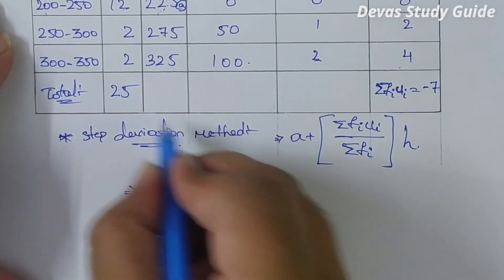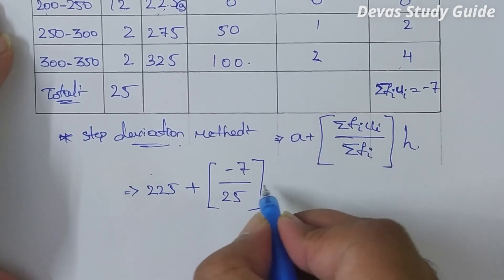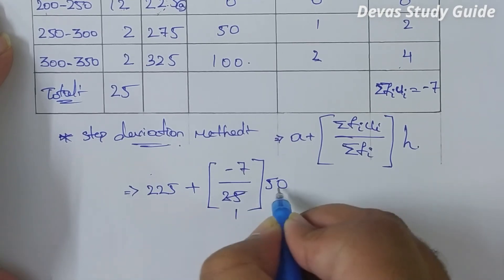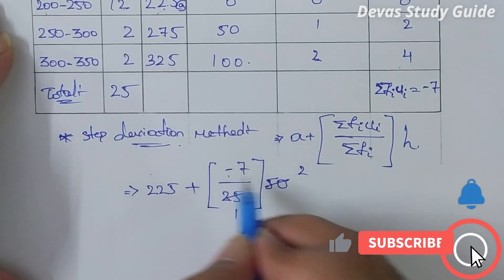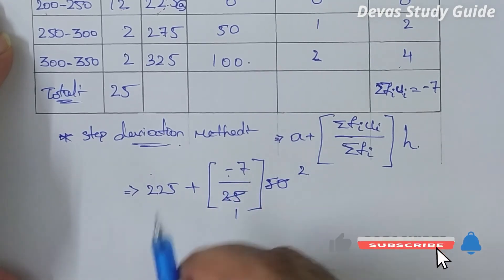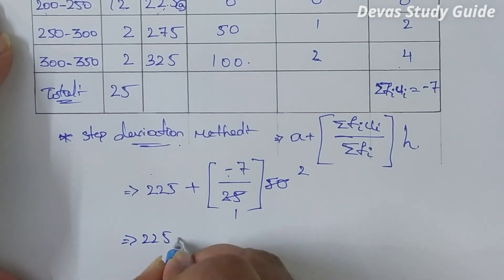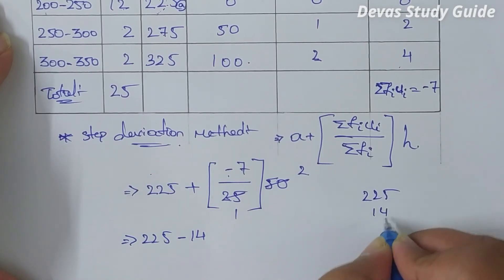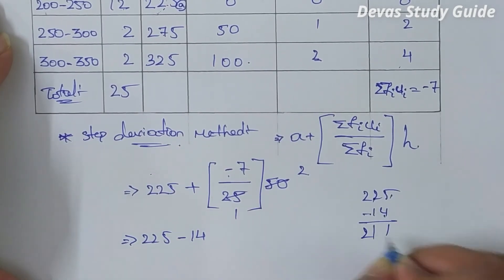Sigma fi ui is minus 7, sigma fi is 25, and h is 50. So: 225 plus (minus 7 divided by 25) into 50 equals 225 plus minus 14, which equals 211. The mean daily food expenditure is 211.